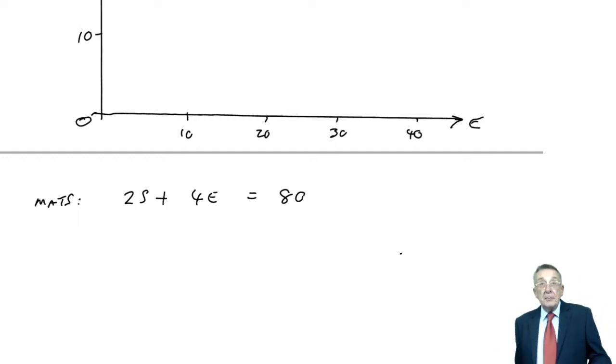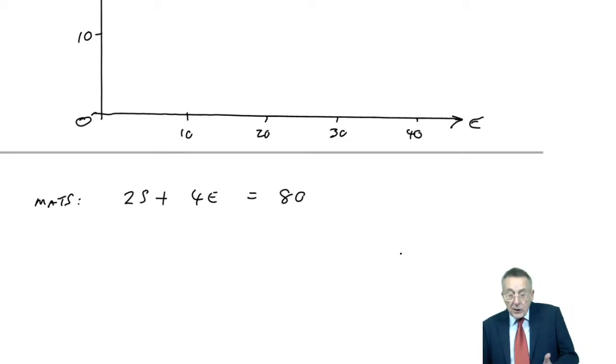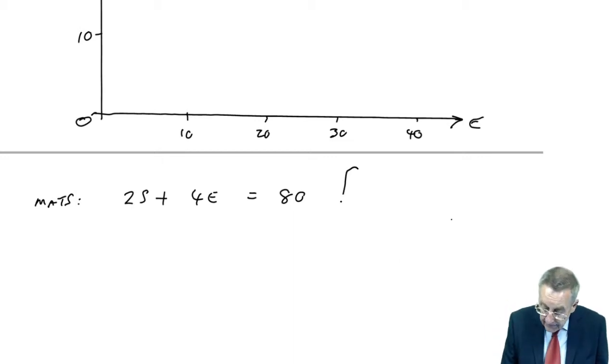I'm going to put on the graph what happens when it's equal to 80. You should know from school that an equation of that form, where you've no S squared, S cubed and things, is a straight line.